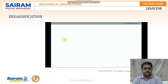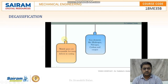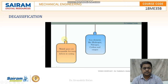We know that gases are mainly accountable for many defects in the casting process. Elements like hydrogen, nitrogen, carbon, and oxygen are responsible for these defects. These elements are dissolved in molten metal. If they are not removed, they are going to recombine to form their molecules in the solid phase of the metal.